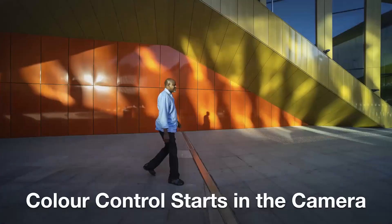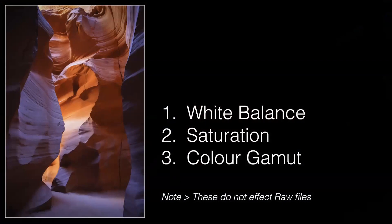We're going to look at what colour adjustments we can actually do inside of our cameras before we even get the images into Lightroom. What we're prepared to do will depend on whether we're a RAW shooter, shooting in JPEGs, or shooting movies. If you're a RAW shooter, the following three controls might seem superfluous, but they do impact to some extent on what we're doing and our workflows.